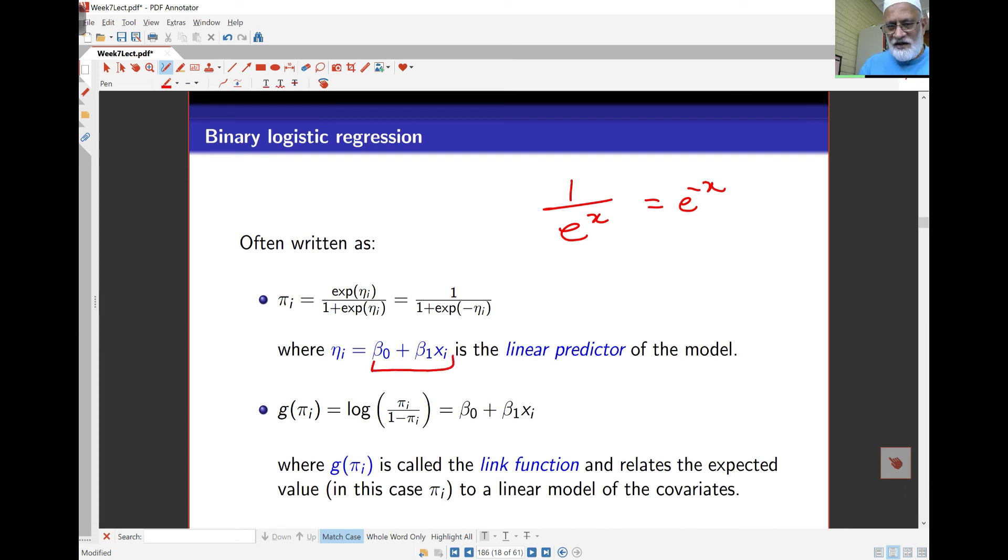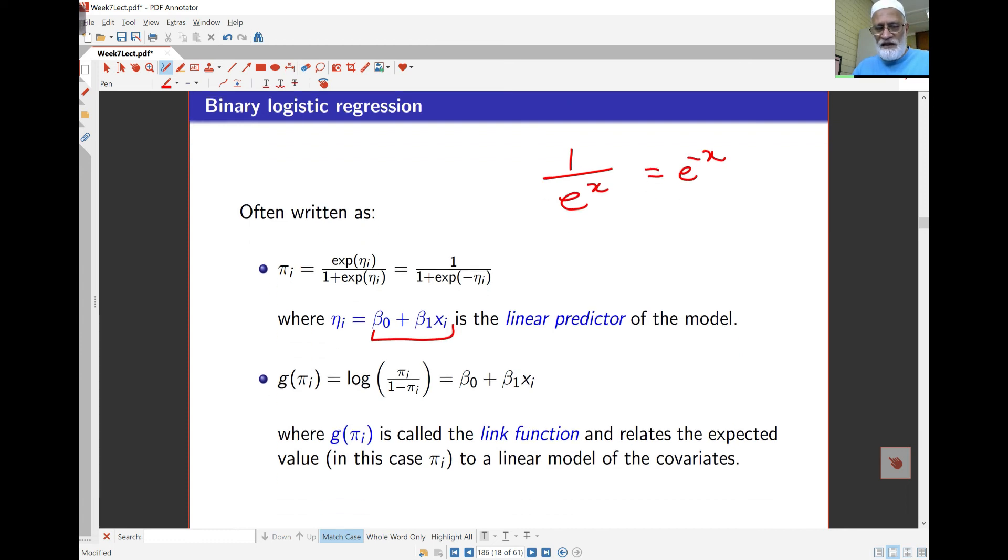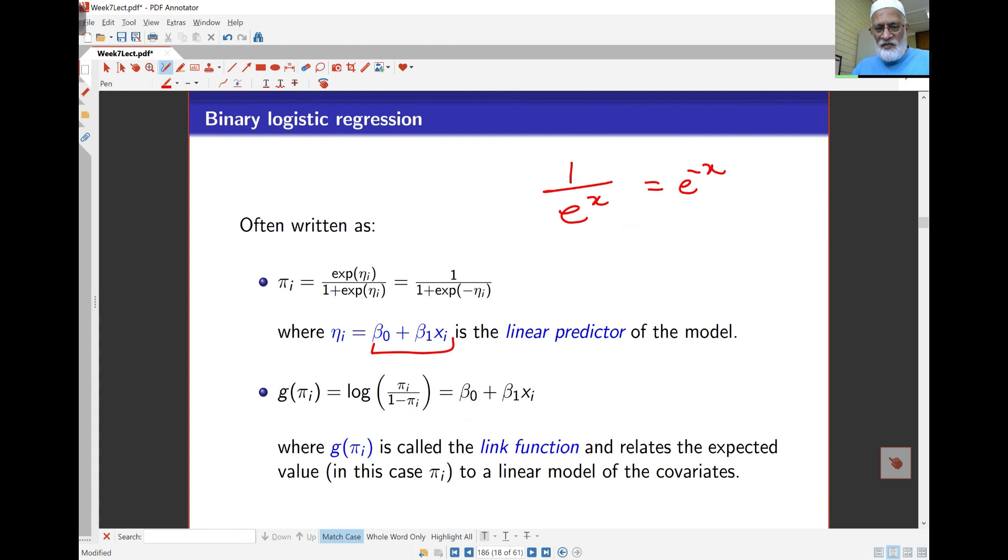This ηi is my linear predictor of the model. This is how we think of this mathematically: g(πi) = log(πi / (1 - πi)), and that's some function of the covariates. We call g the link function. In this case, my g is the log of the odds ratio, so this is the logit link.